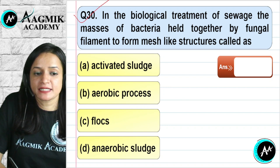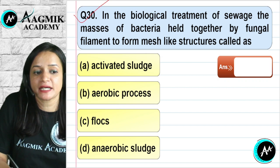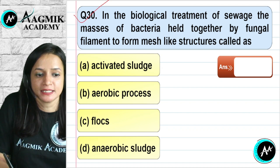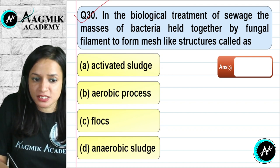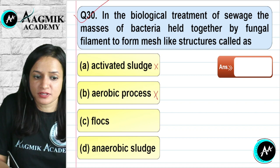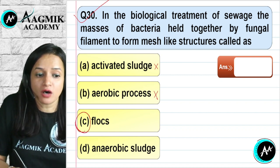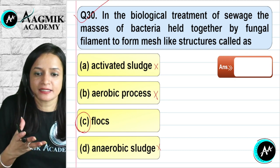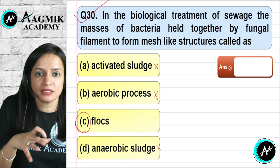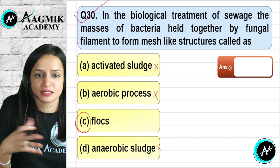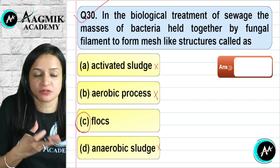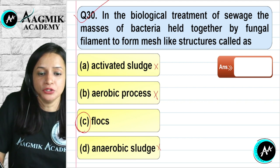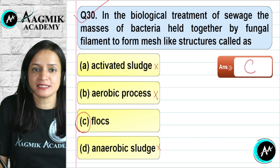Question number 30: In biological treatment of sewage, the masses of bacteria held together by fungal filaments forming a mesh-like structure are called floc. Activated sludge is not the right term here. It is not aerobic process specifically. The structure formed by bacterial colonies with fungal hyphae in between for filtration is called floc. The correct option is C.